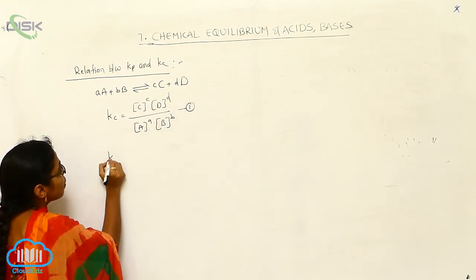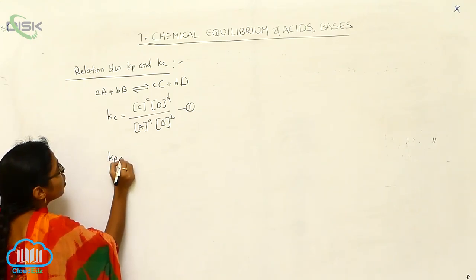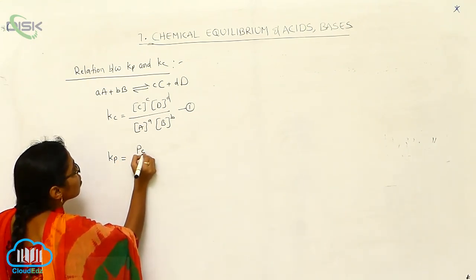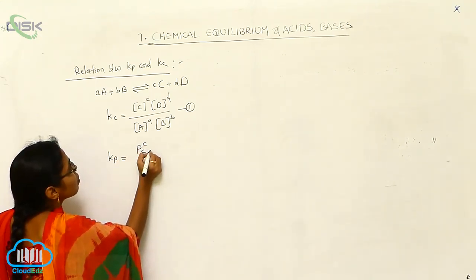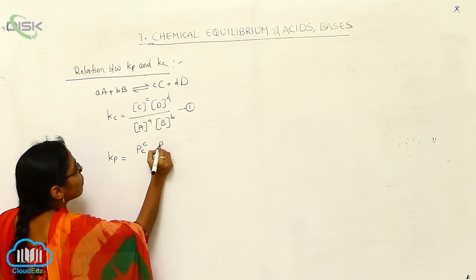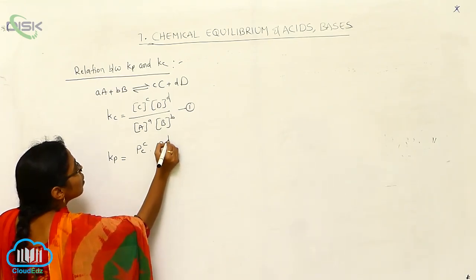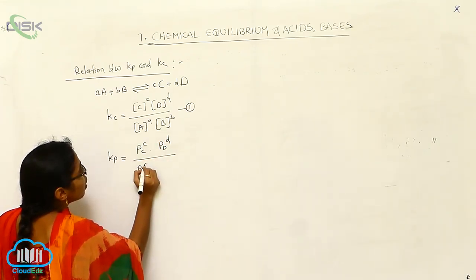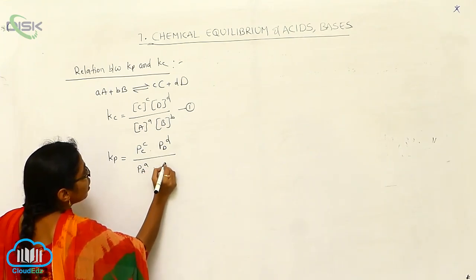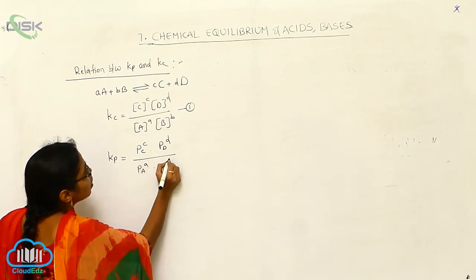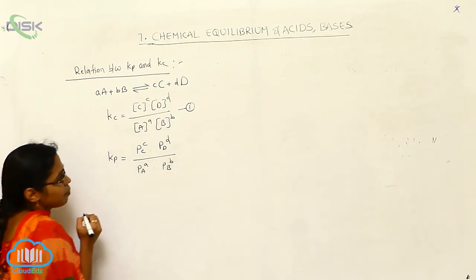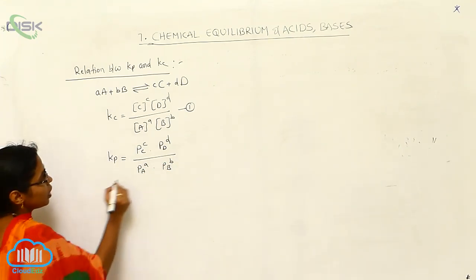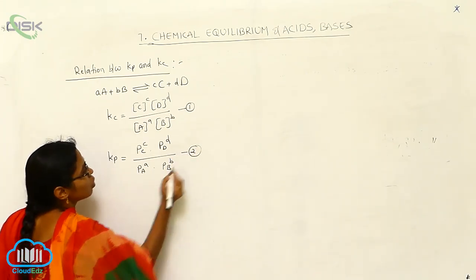For Kp, what can we write? Kp = Pc^c × Pd^d divided by Pa^a × Pb^b. This is equation 2. Now, from the ideal gas equation we will derive the relationship.